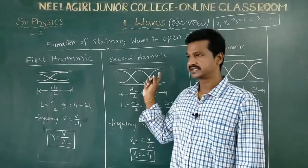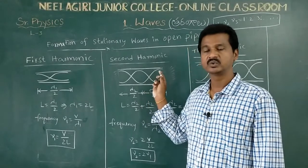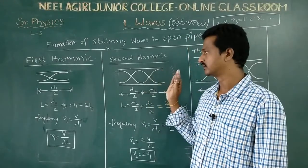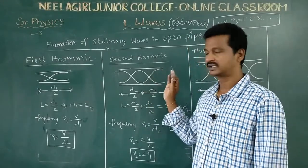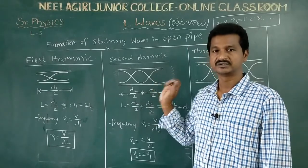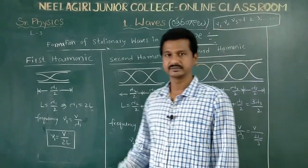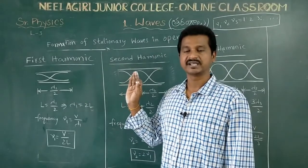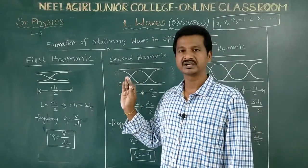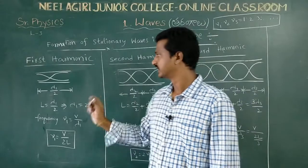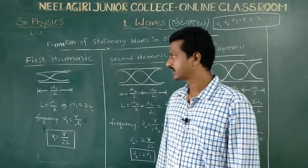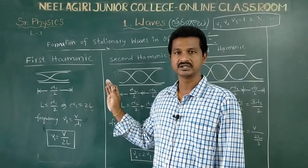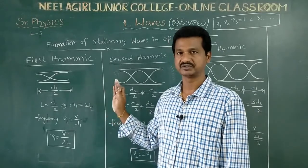This is the last antinode — that is, compulsory end. At two open ends, antinodes are compulsorily formed. The antinode has maximum displacement — maximum amplitude — and the node has zero amplitude. So, in the first harmonic, the frequency can be determined.